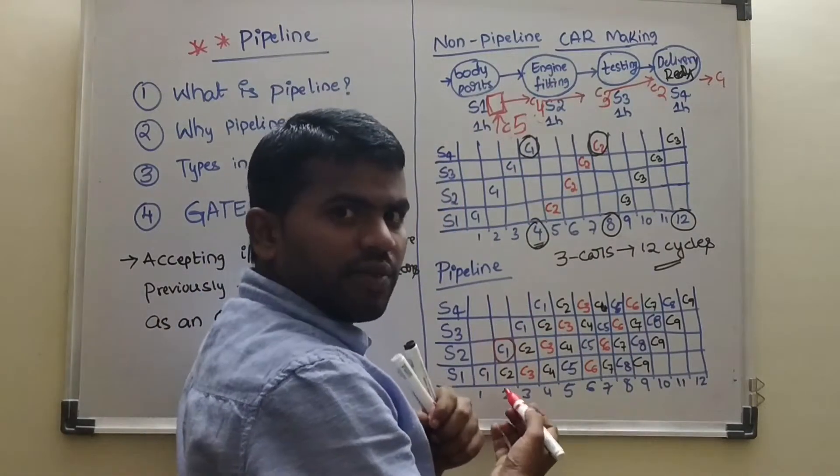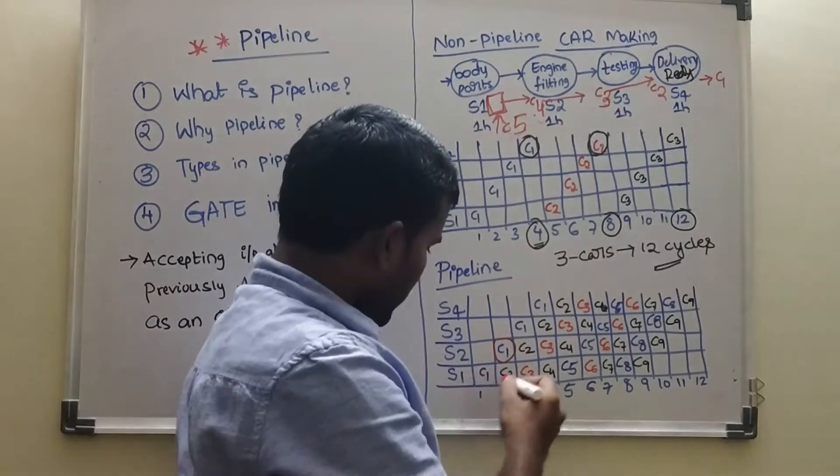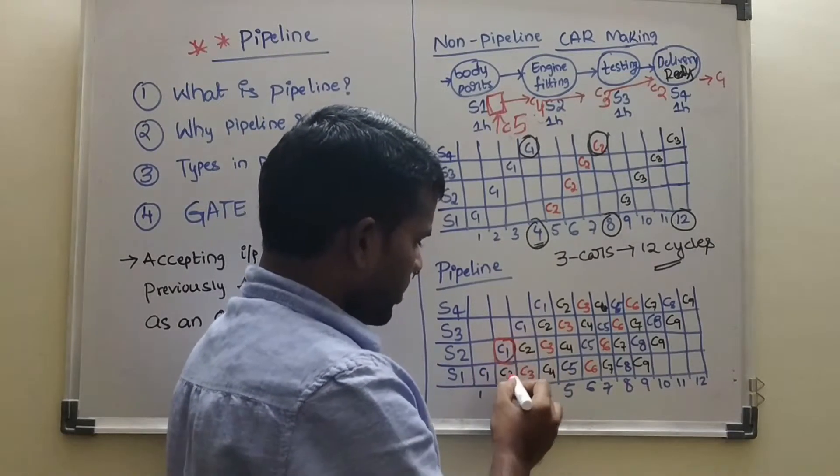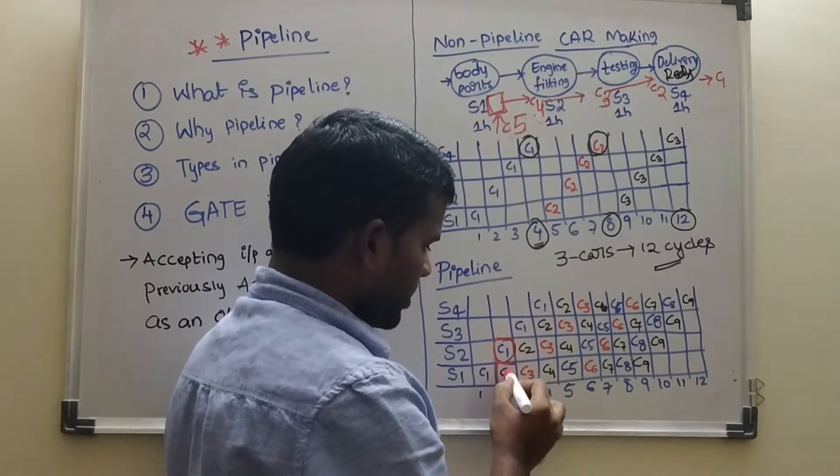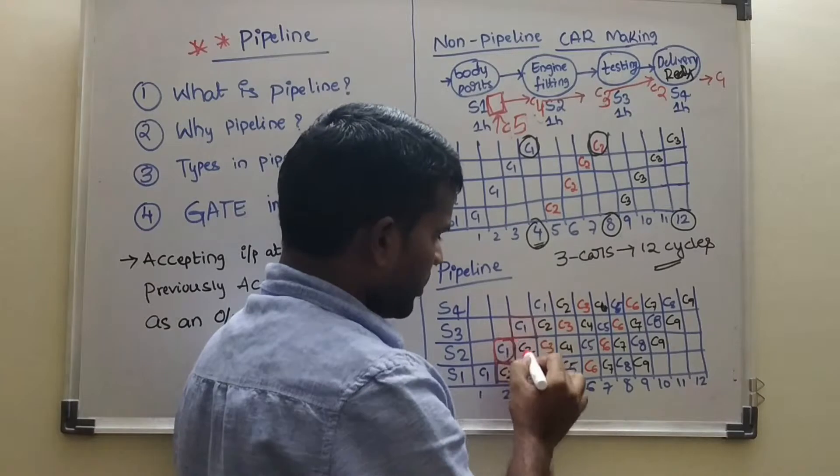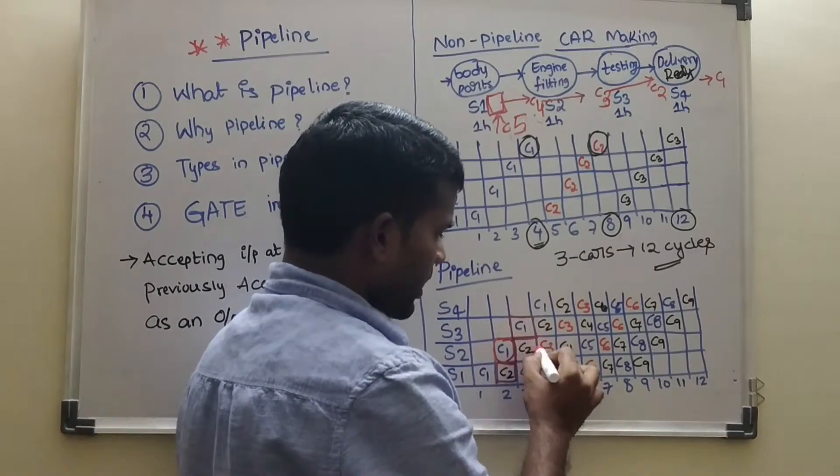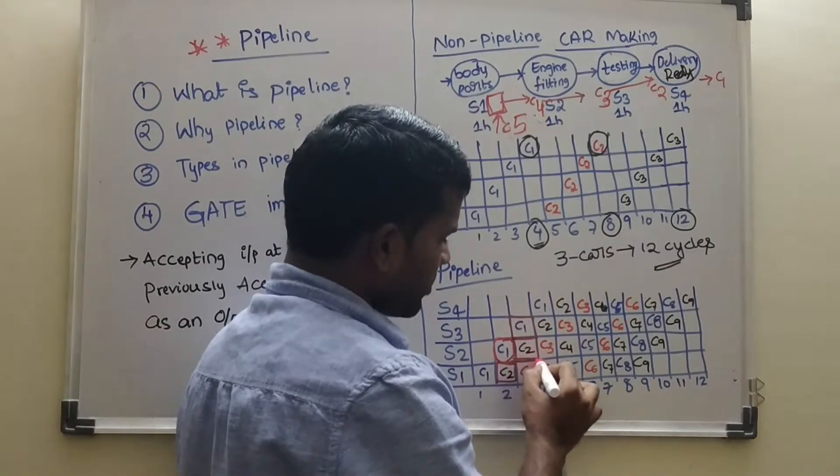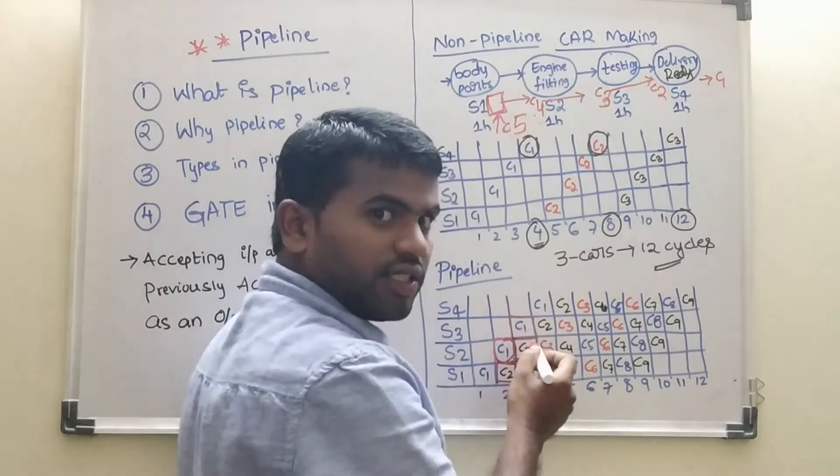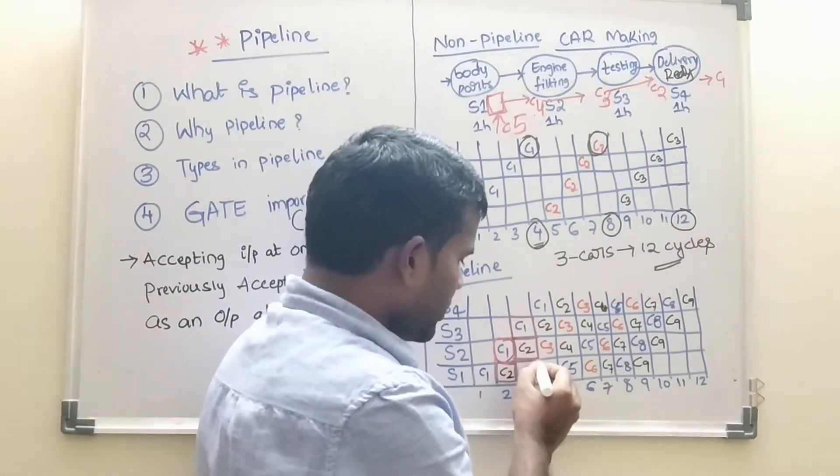Here same thing is happening. C1. Whenever it is in second stage. C2 came into first stage. Whenever C1 moves to third stage, C2 moves to second stage. Whenever C1 is second state. And C1 is in third state. This state is empty.